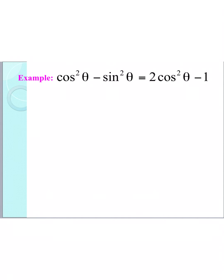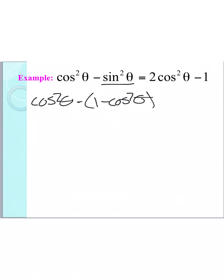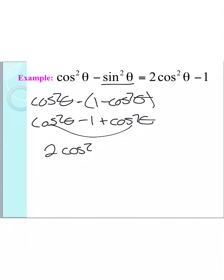I'm going to start with the left side again. I have cosine squared minus sine squared. I'm going to rewrite sine squared using my Pythagorean identity — sine squared plus cosine squared equals 1, so sine squared equals 1 minus cosine squared. Substituting that in, I have cosine squared minus (1 minus cosine squared). Distributing the negative sign gives cosine squared minus 1 plus cosine squared. Combining the two cosine terms gives 2 cosine squared minus 1, which equals 2 cosine squared minus 1.